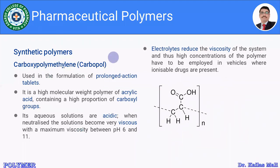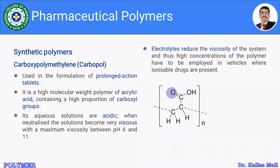The next polymer is Carbapol. It is widely used in prolonged-action tablets and for preparing controlled drug delivery systems. It acts as a matrix former and is used in various bio-adhesive drug delivery systems due to its good bio-adhesivity. Carbapol has a high molecular weight and is made up of acrylic acid containing a high proportion of carboxyl groups. Its aqueous solutions are acidic, and when neutralized, these solutions become very viscous with maximum viscosity between pH 6 to 11.